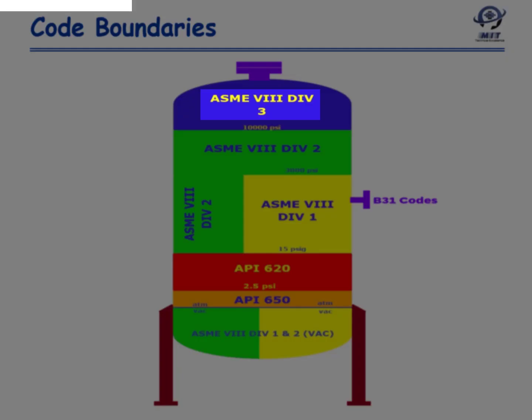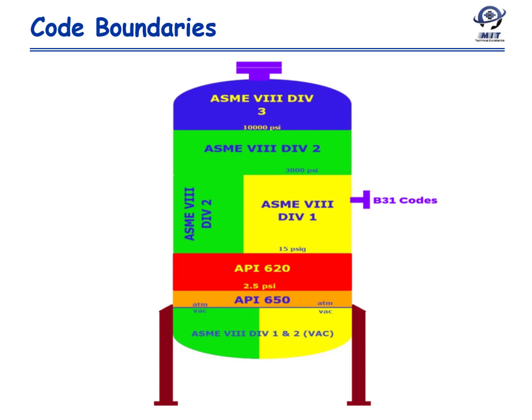Section 8 Division 3 is classified as a very high pressure range code and is recommended by the code for pressures above 10,000 psi. There is no restriction on using it below 10,000 psi, but in that range it starts to lose its cost benefits compared to Division 2.